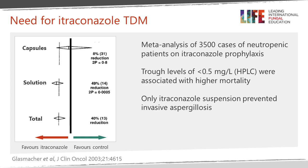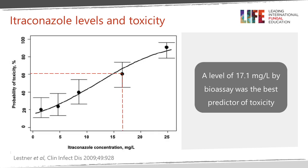The arguments for itraconazole TDM were mostly conducted with respect to prophylaxis in patients with neutropenia and leukemia. Capsules were not very well absorbed in these patients, and levels less than 0.5 by HPLC were associated with much higher mortality than those with higher levels. Only the solution had a significant impact on reducing invasive aspergillosis incidence. In work published many years ago, patients with bioassay levels above 17 had a markedly increased incidence of adverse events, making minimizing adverse events another argument for measuring itraconazole.